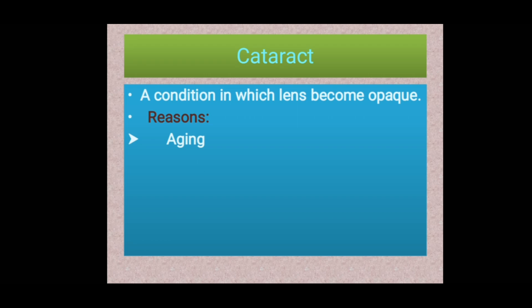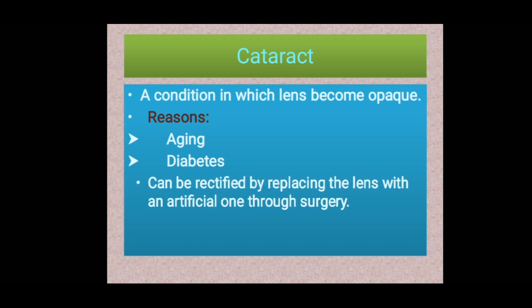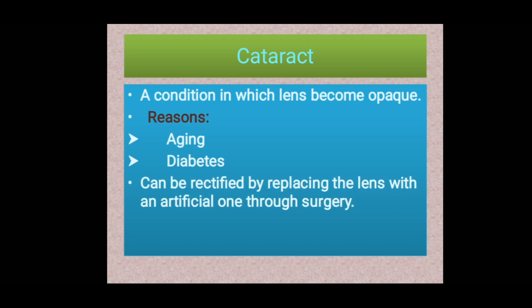The reasons for cataract include aging — as we grow older the efficiency of cells decreases — and diabetes, where excess glucose may cause cloudiness inside the lens. It can be rectified by replacing the lens with an artificial one through surgery, which is quite common nowadays.